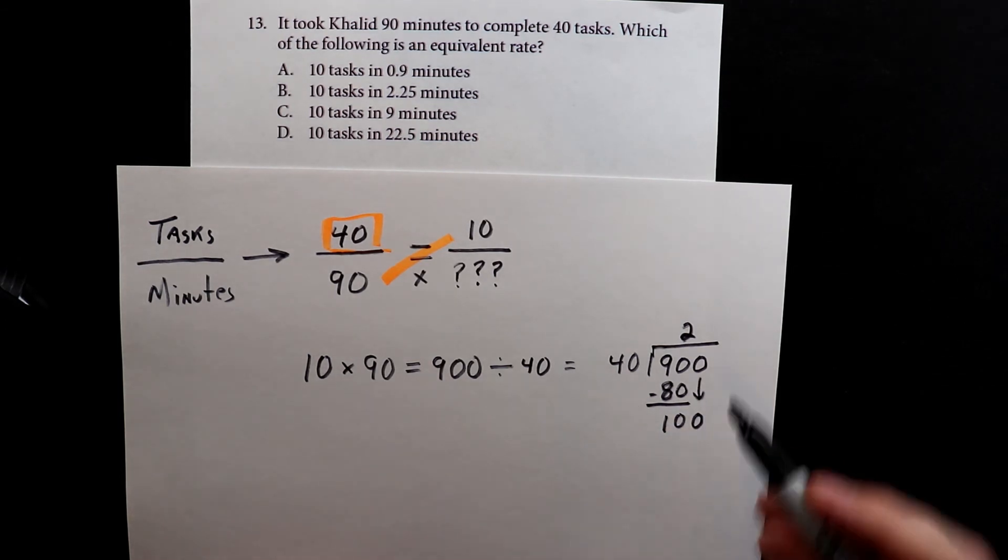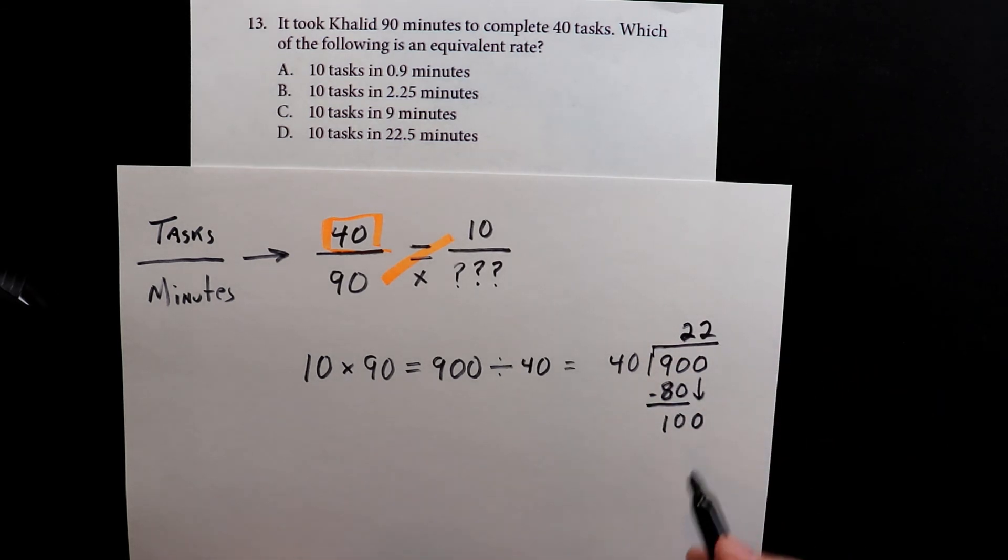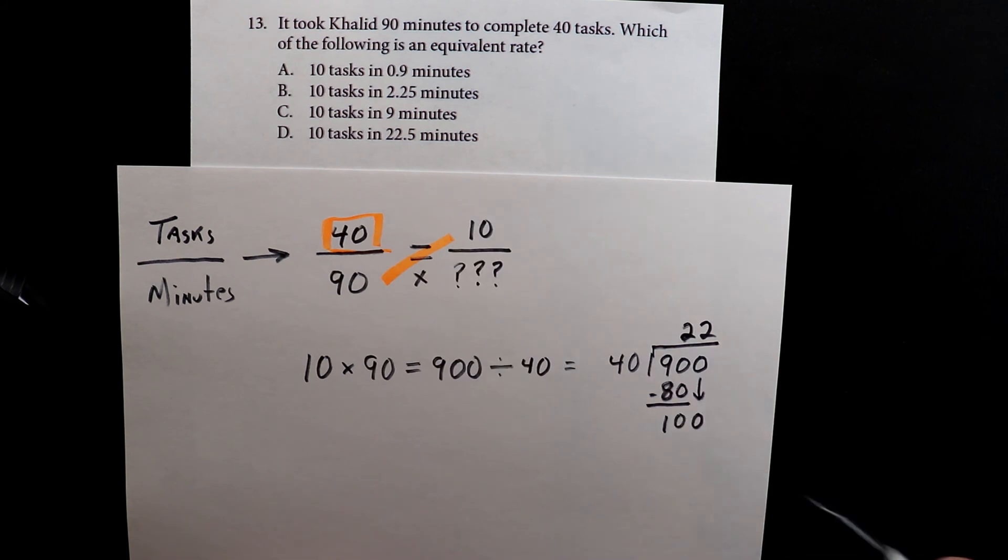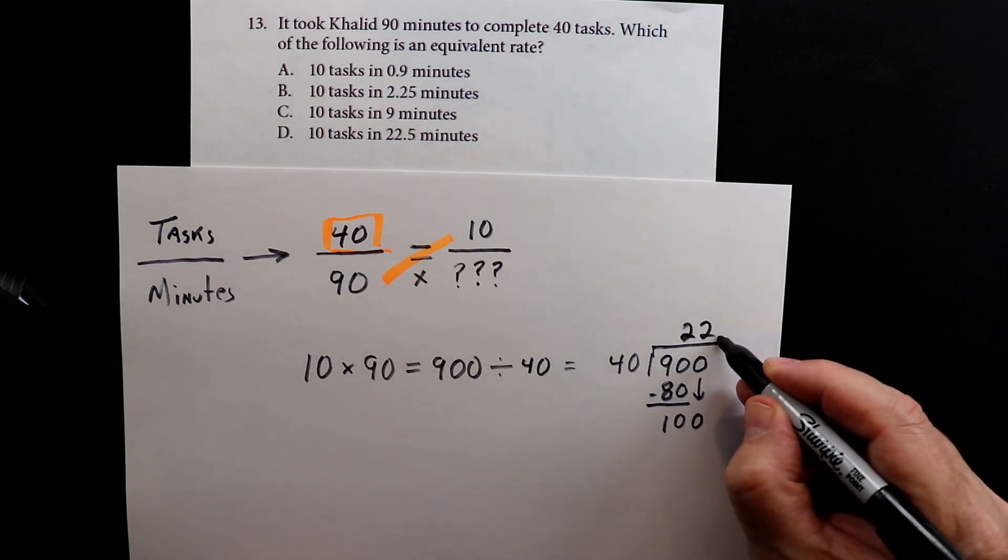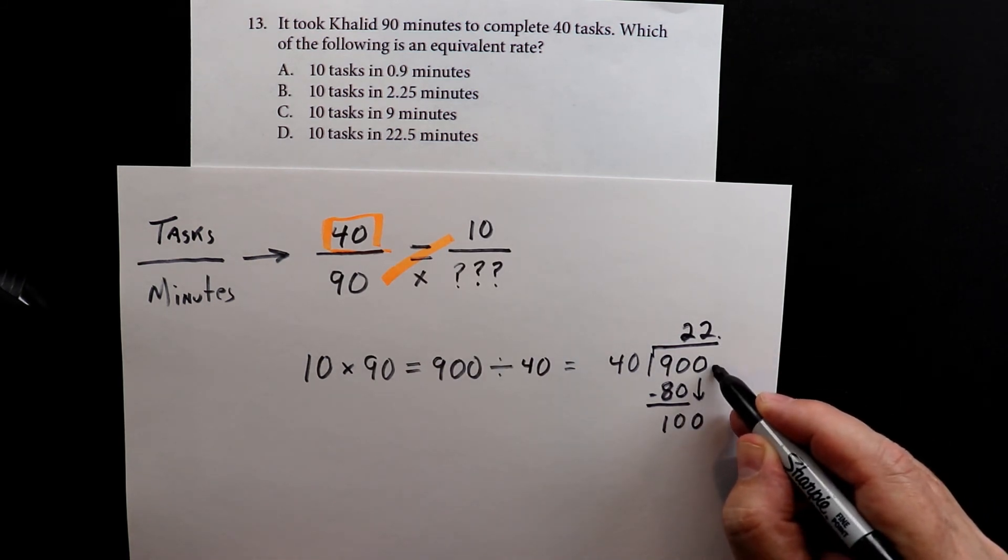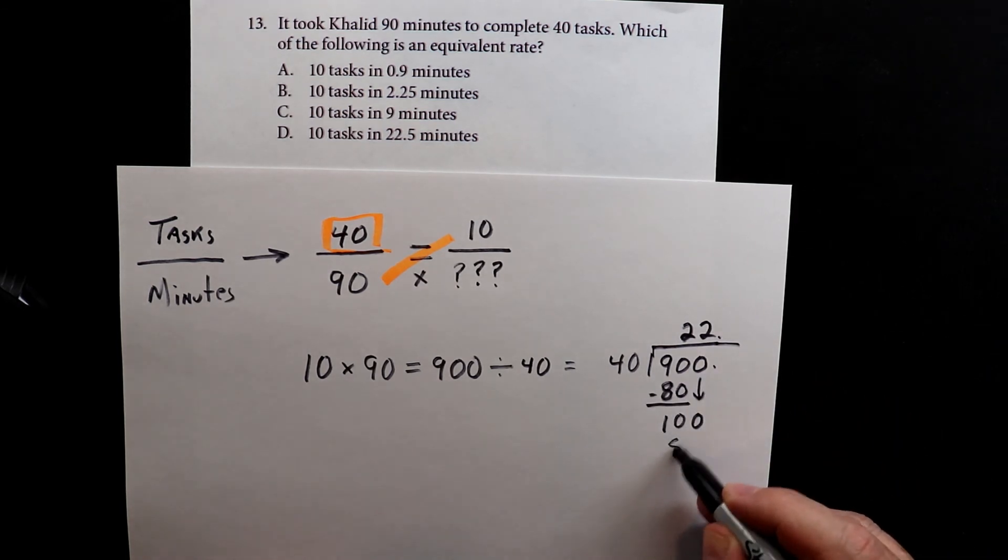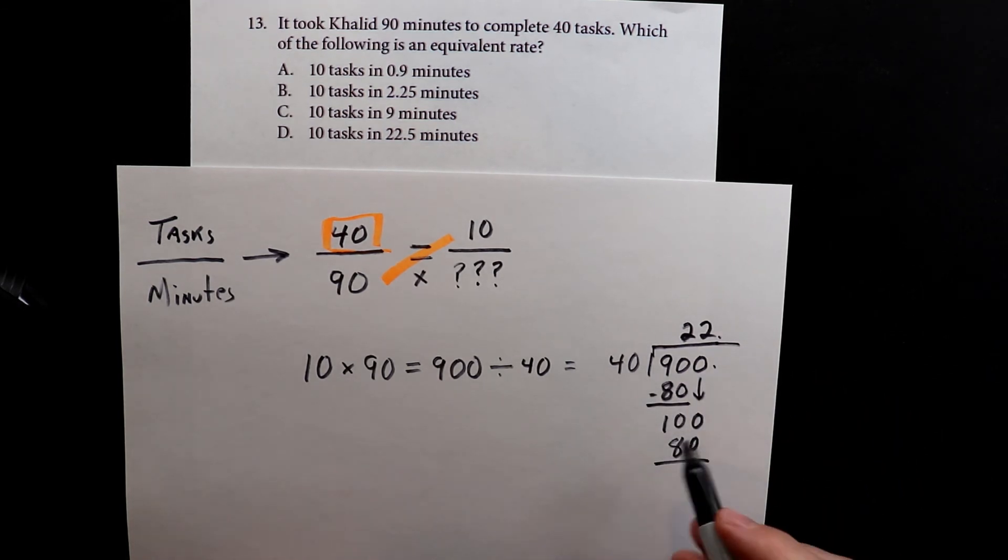40 goes into 100 two times. So we can see right away that it's going to be letter D. But let's just finish it anyway, just so we can check for sure to see if it's the exact amount. 2 times 40 is 80. 100 minus 80 is 20.